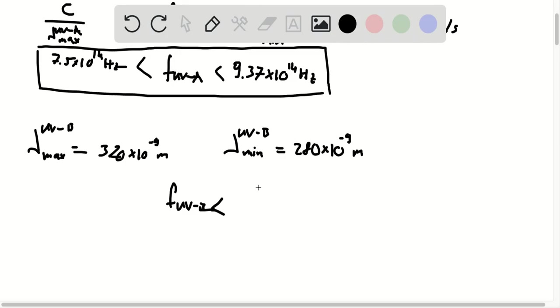And so this is going to be less than c over lambda UVB min and greater than c divided by lambda UVB max.